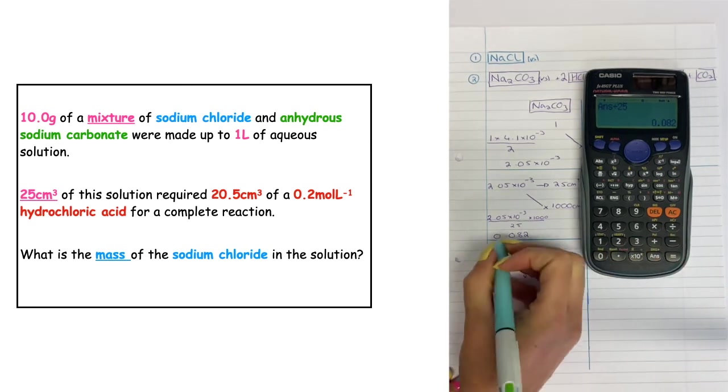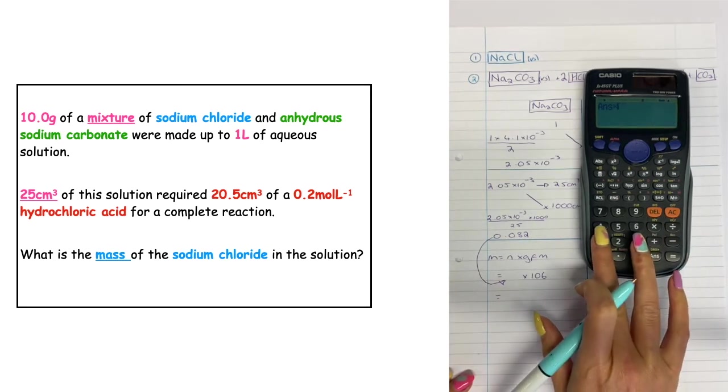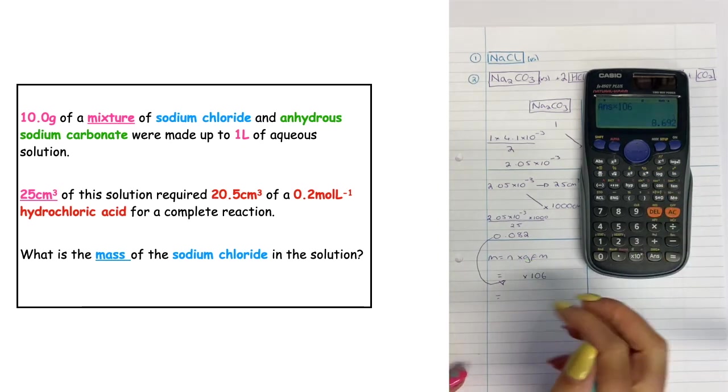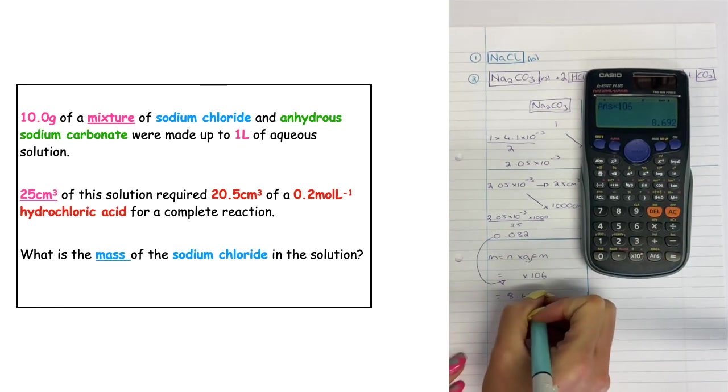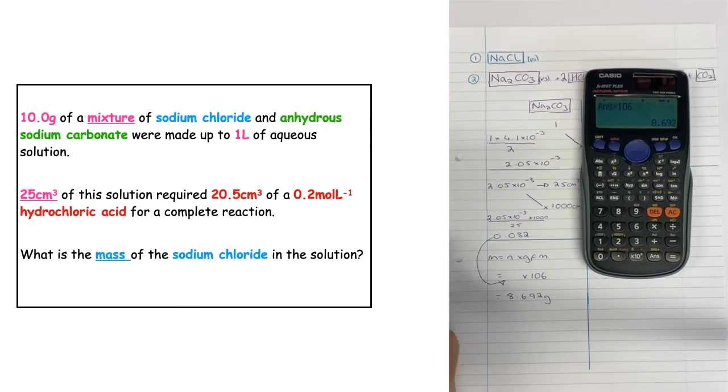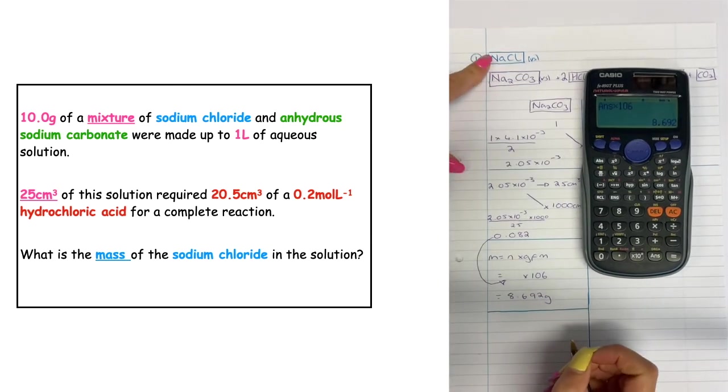I then sub that in to this equation here, so I'll times it by 106 which is the GFM of my sodium carbonate. And what that comes out at is 8.692 grams of my sodium carbonate. The question doesn't ask us about the sodium carbonate though, what it wants us to do is to work out our original sodium chloride.